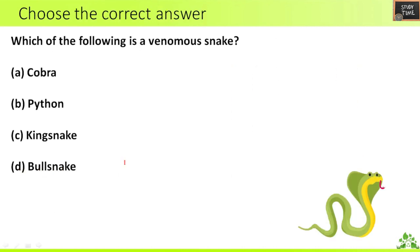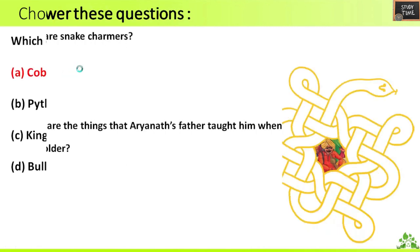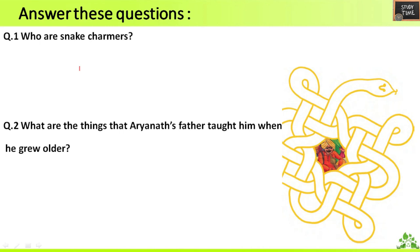Next: which of the following is a venomous snake? Cobra, python, king snake, bull snake. The correct answer is cobra.